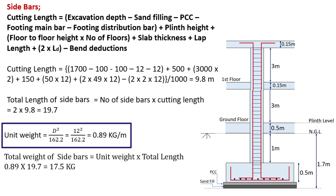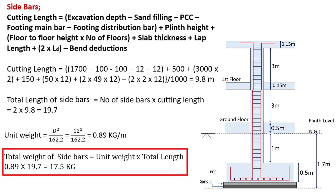The unit weight of side bars equals D² / 162.2, where D is 12 mm, giving 0.89 kg per meter. The total weight of side bars equals unit weight × total length — 0.89 × 19.7 m = 17.5 kg.